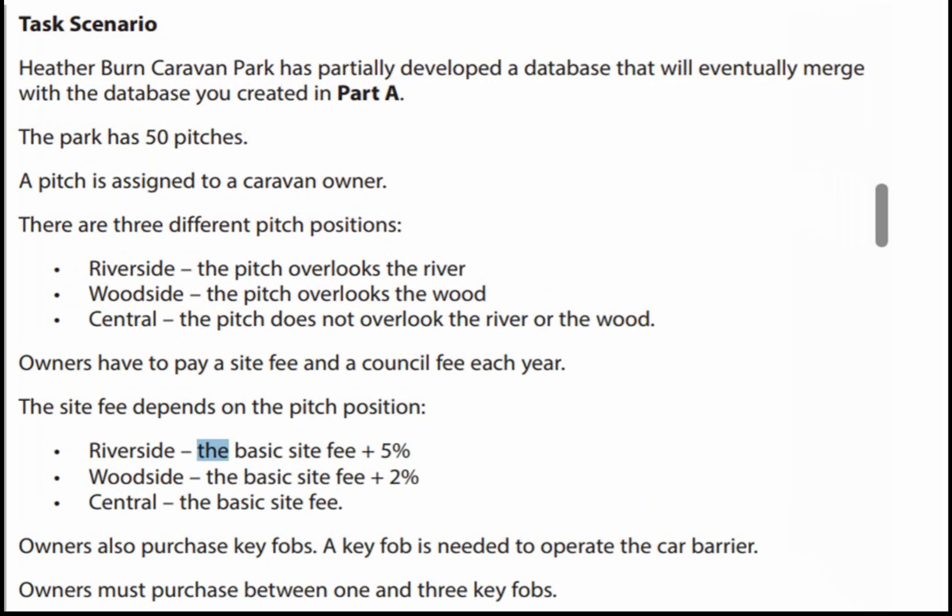Heatherburn Caravan Park has partially developed a database that will eventually merge with the database you created in Part A. The park has 50 pitches. A pitch is assigned to a caravan owner. There are three different pitch positions: Riverside, where the pitch overlooks the river; Woodside, where the pitch overlooks the wood; and Central, where the pitch does not overlook the river or the wood.